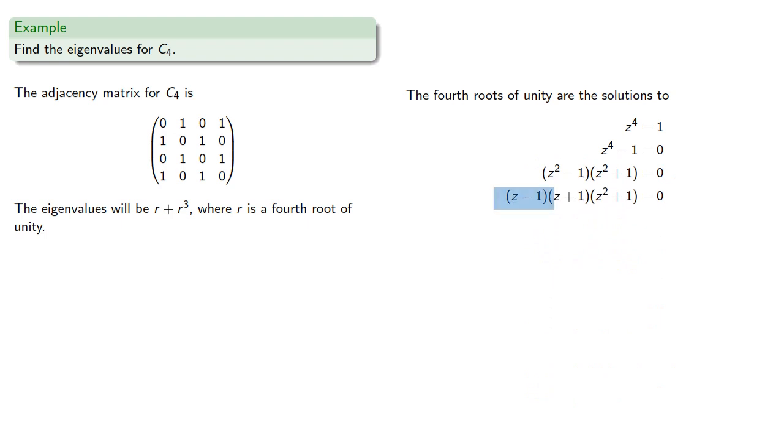Our first factor, z minus 1, gives us the root r equals 1. If r equals 1, we obtain eigenvalue 1 plus 1 cubed equals 2, and the corresponding eigenvector will be the powers of 1, which are just all ones.